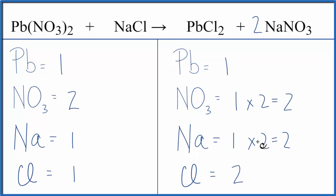Let's fix the Na. We need 2, and we have 1. Put a coefficient of 2. So 1 times 2. That gives us 2 Nas. Those are balanced. The 2 applies to everything. 1 Cl times the 2. That gives us 2 Cl. So those are balanced, and we're done.